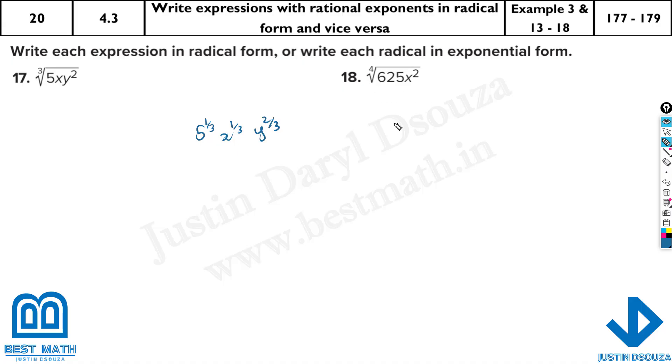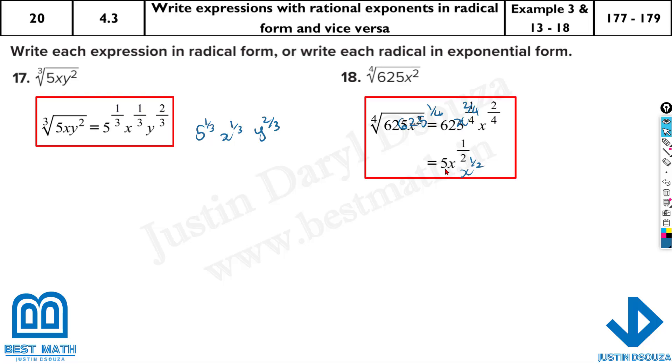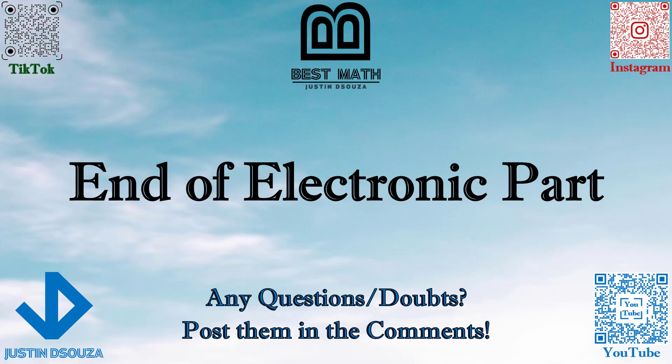And what about this? It's 625 to the power of 1 fourth, and then x 2 by 4. You can simplify this, x becomes half, that's square root. And what about this one here? It is written as 5, yes. If you simplify, you can just put in the calculator, it becomes 5 because 5 to the power 4 is 625. So the answer is 5x power half.